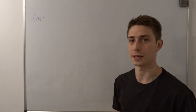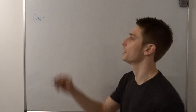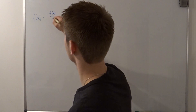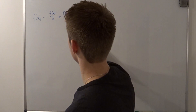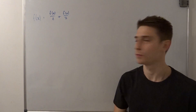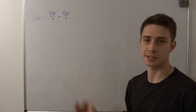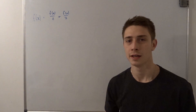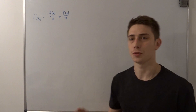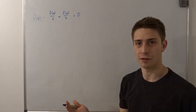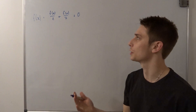So f of x is nothing else than f of x over 2 plus f of x over 2. You add them together and you get f of x again. And we can add a zero here and it won't change anything to the equation.